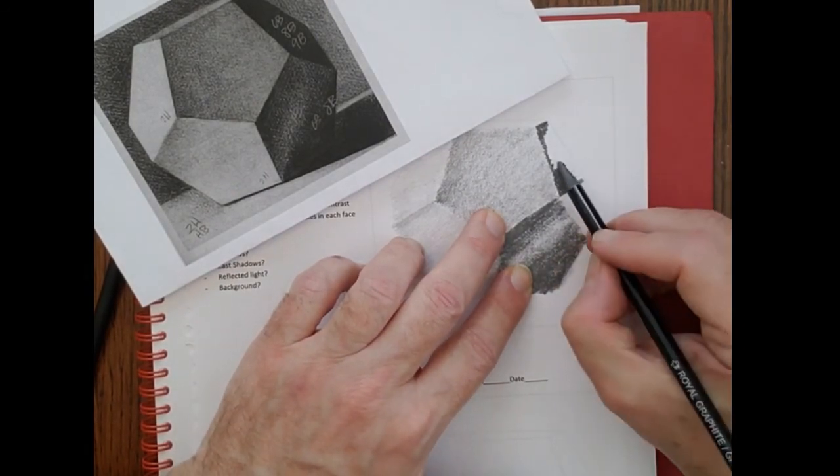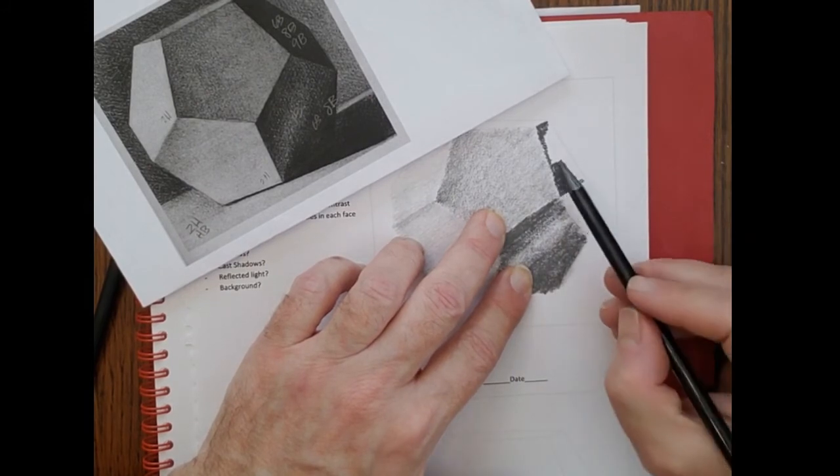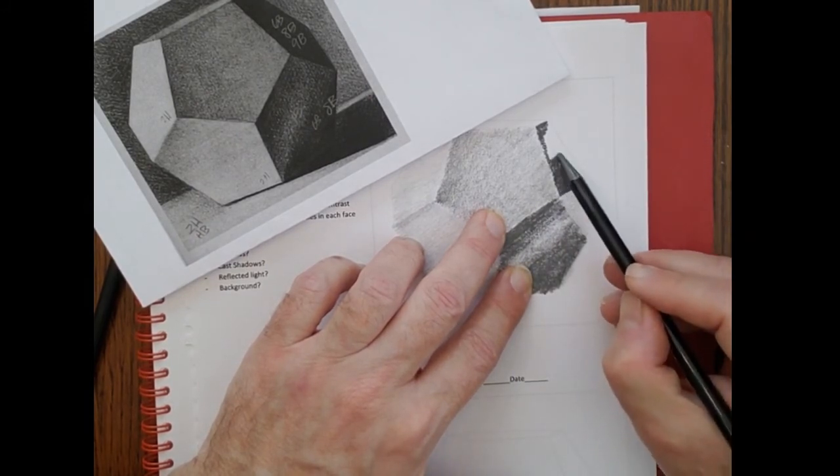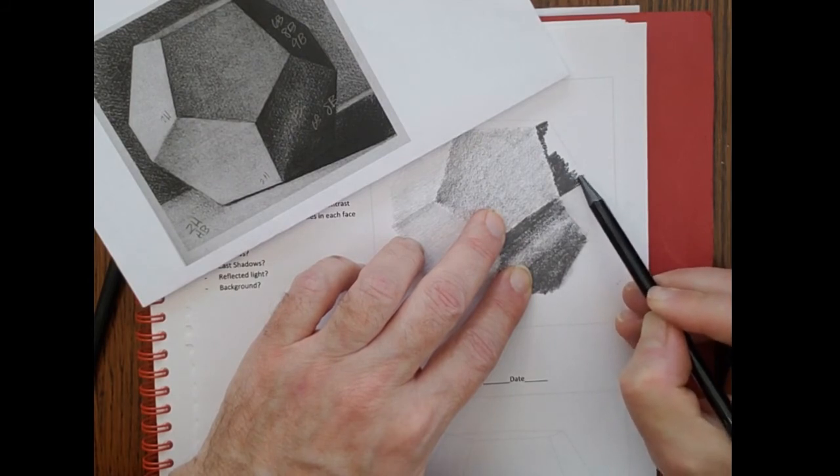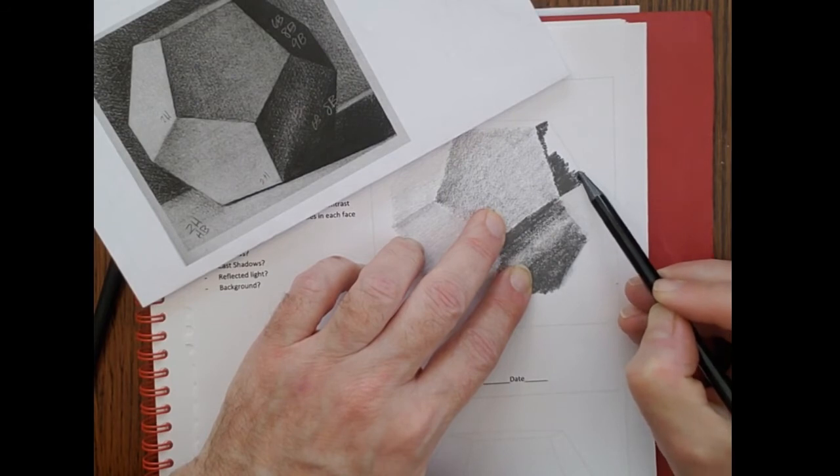Try not to get tempted to use the tip. Just keep using the side of the pencil, even though the little white dots are going to be there. Don't worry about those. Nobody will ever see those. Or it's just part of a pencil drawing.